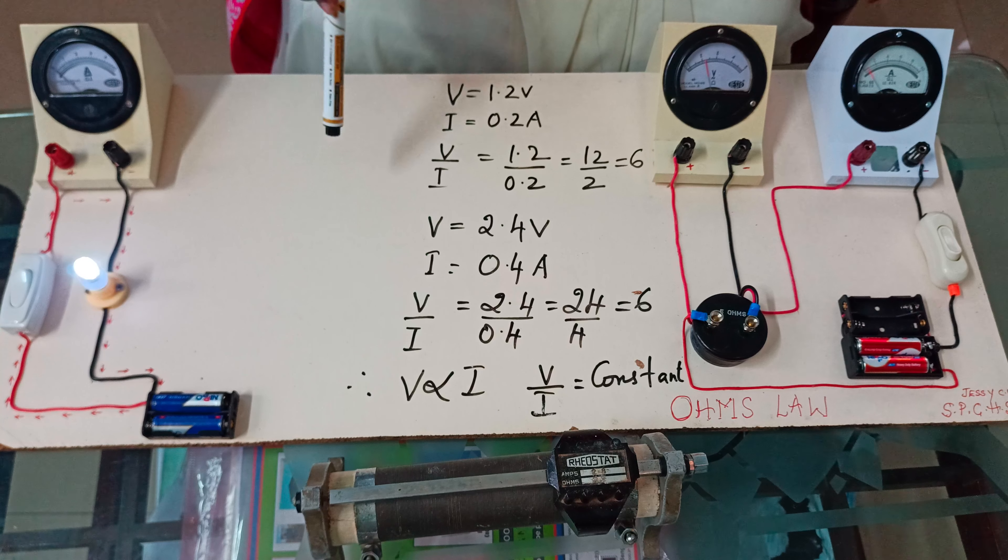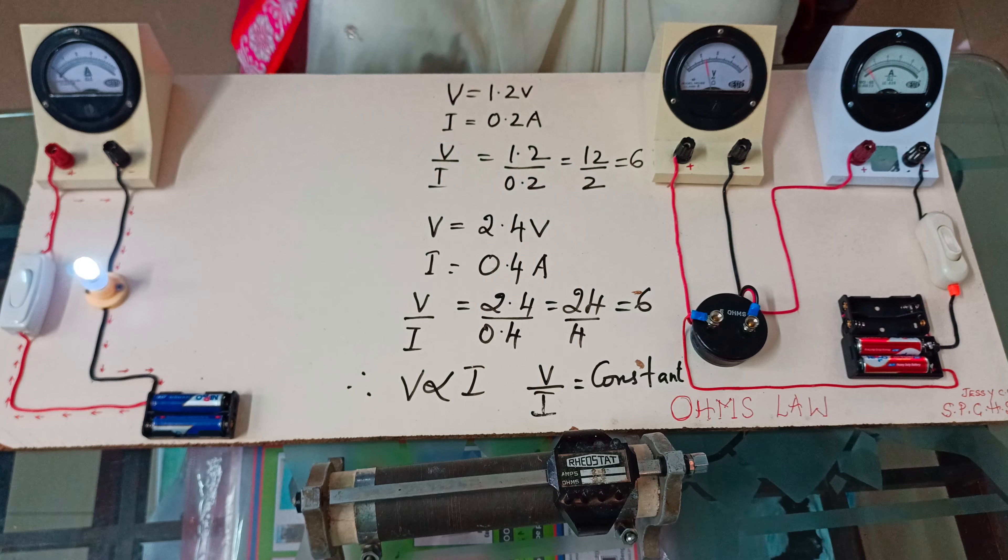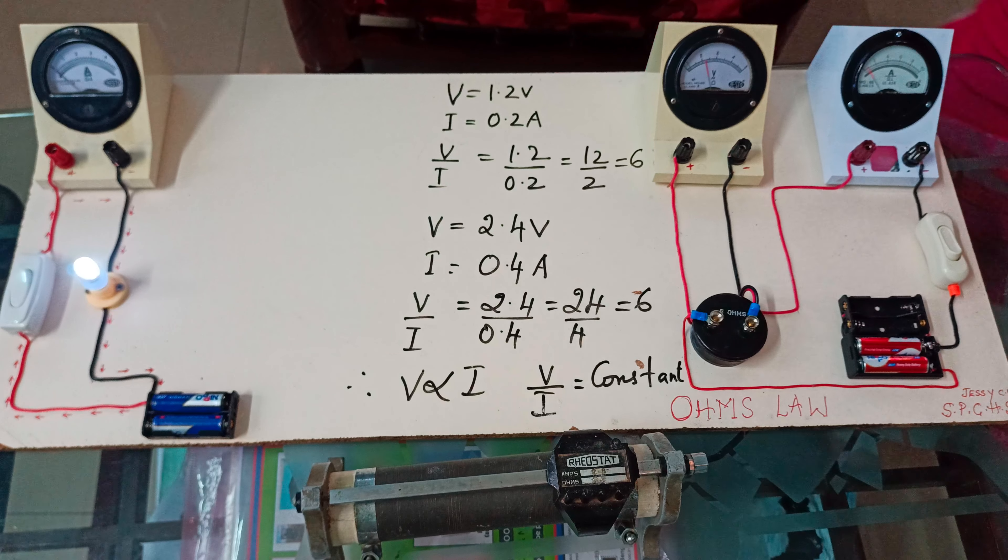If I take the ratio, I am getting 6. So from these observations, I can understand that voltage or potential difference is directly proportional to the current. As voltage is increasing, current is also increasing — it is directly proportional. So only Ohm stated his law called Ohm's law: the potential difference across the ends of a metallic wire is directly proportional to the current flowing through it.